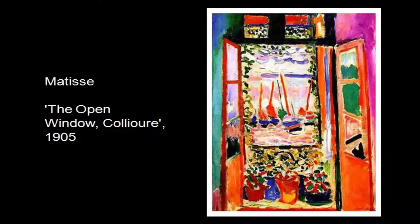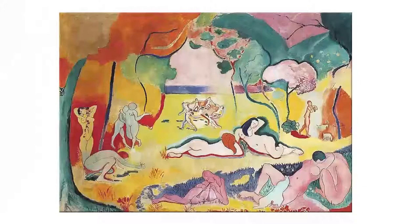The Fauves were pursuing an aesthetic where colour would play not only a dominant role but would define the forms, establish the forms, and vitalise the forms. Colour became, in the hands of the Fauvist painters, the principal tool for a painting.